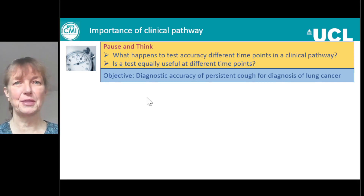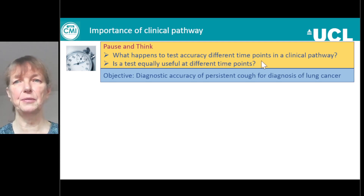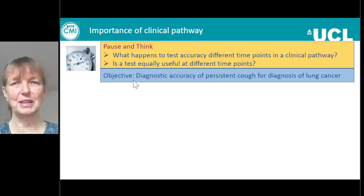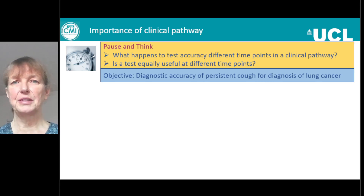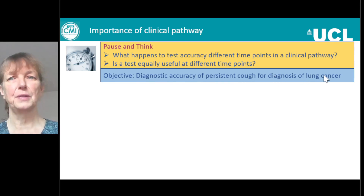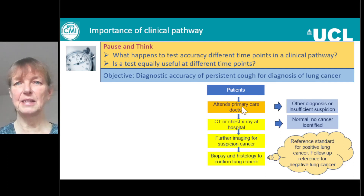Here's one of our pause and think exercises. The question we're trying to answer is: what happens to test accuracy at different time points in a clinical pathway? Is a test equally useful at different time points? We're going to use the objective from the first video — looking at the diagnostic test accuracy of persistent cough for the diagnosis of lung cancer — and here again is our little flow chart.